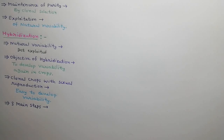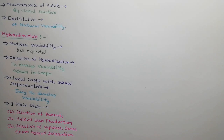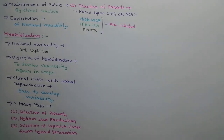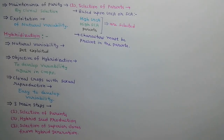There are three main steps in the process of hybridization: selection of parents, hybrid seed production, and selection of superior clones from hybrid generation. The first step is selection of parents. Parents are selected on the basis of their GCA and SCA. Only those parents are selected which show high GCA or high SCA. Characters which are to be improved must be present in the parents.